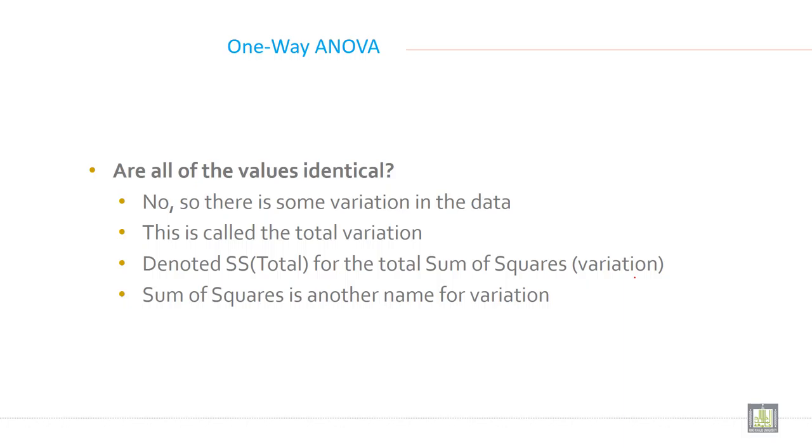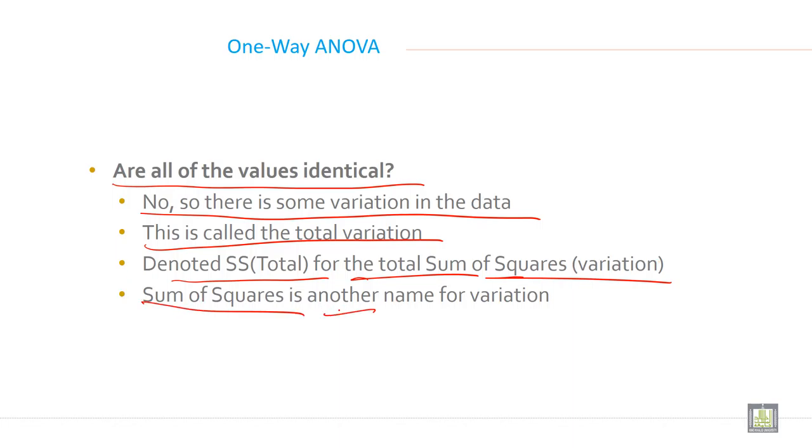Are all the values identical in the table? No, so there is some variation in the data. There is some differences in the data between all the three groups. This is called the total variation, denoted SS total. Sum of square is another name for variation.